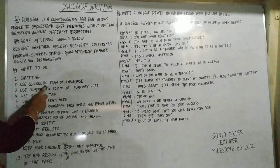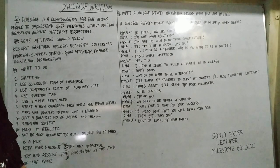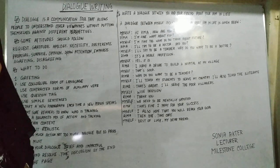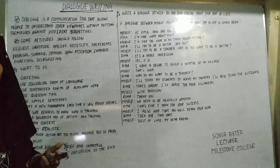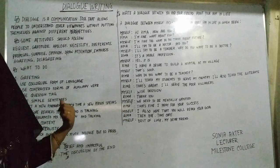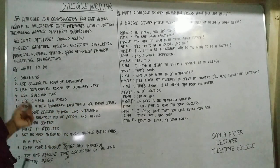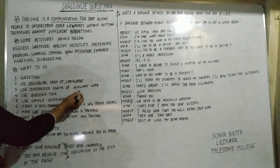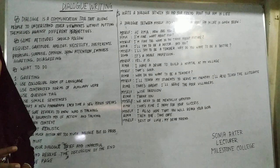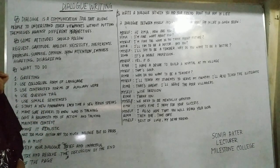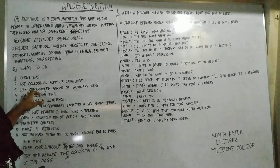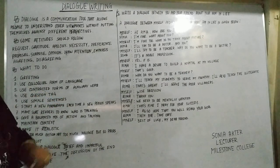Second point: use colloquial form of language. You can use some colloquial form of language — it's not needed to follow strictly the official language. But you should avoid some language used in day-to-day life like 'yeah' and 'hmm'; these types of words you should avoid when writing a dialogue. Then, use contracted forms of auxiliary verbs — contracted form means you should use 'it's' rather than 'it is,' 'he's' rather than 'he is' — this type of contracted form.